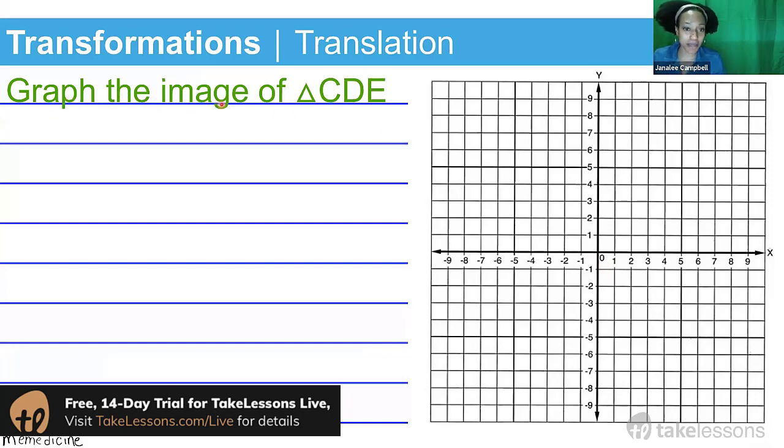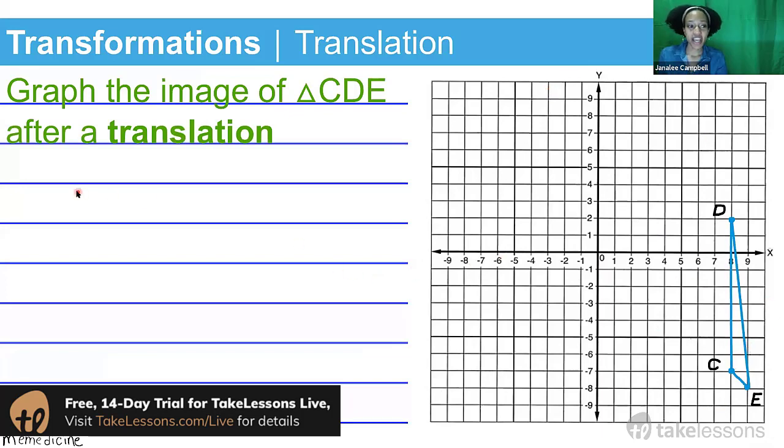is to graph the image of triangle CDE. Well, I first have to show you triangle CDE. Alright, so here goes our triangle CDE, and we're going to be graphing its image after a translation 10 units to the left and one unit up.